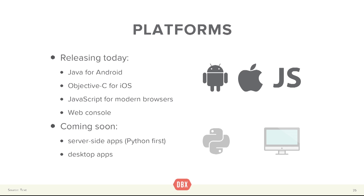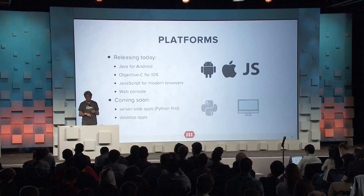What are we releasing exactly? There are three platforms we're releasing today: Android, iOS — which works on iPhone as well as iPad — and JavaScript, which works in modern browsers including Internet Explorer 9 and better. There's also a web console where, as a developer, you can inspect the contents of your Datastore without writing any code — you can just see your tables and browse them. We are hoping to release more languages and platforms. We recognize there is a need to access your data from a server-side application not written in JavaScript, and we're also thinking about desktop applications.